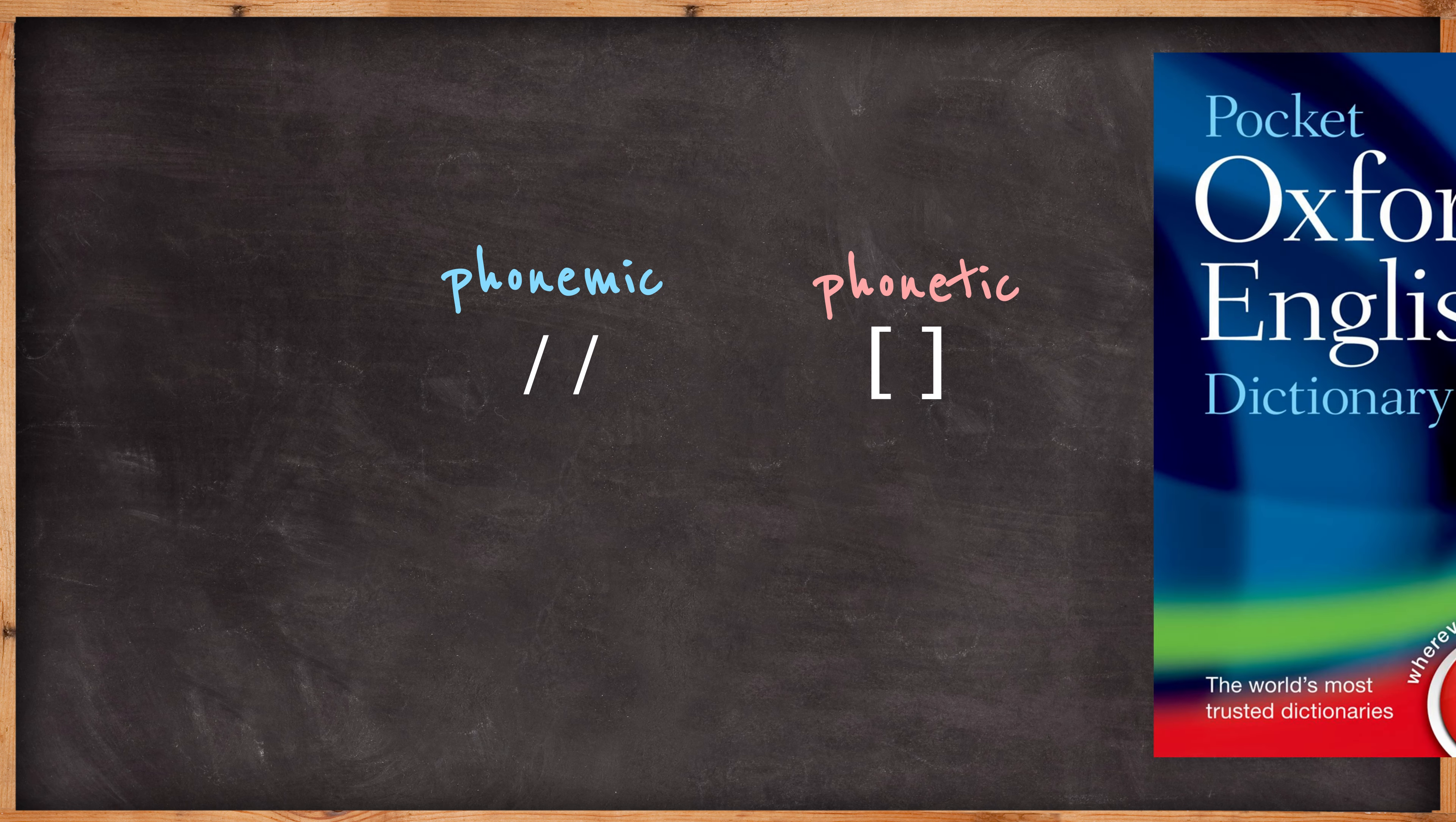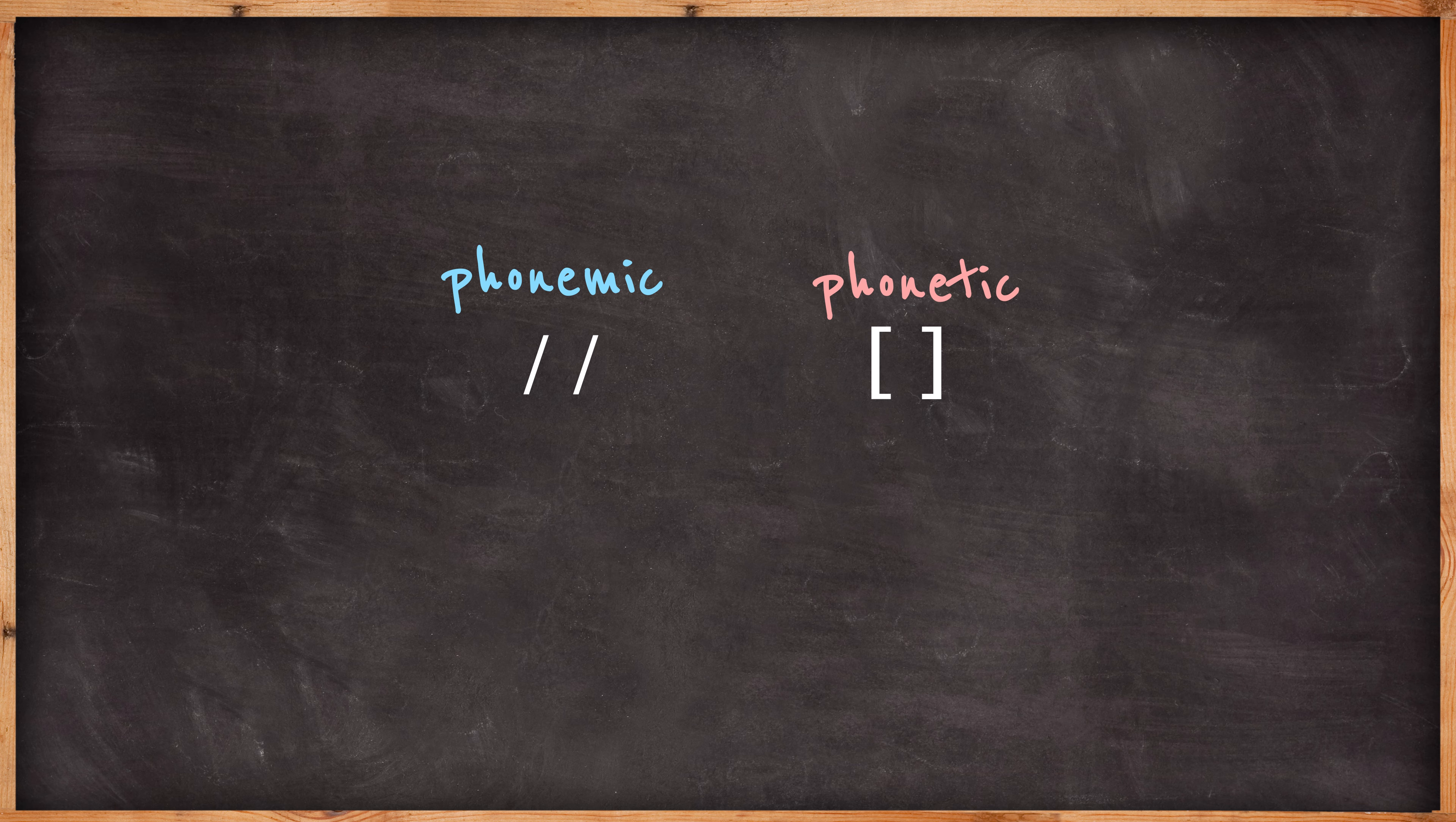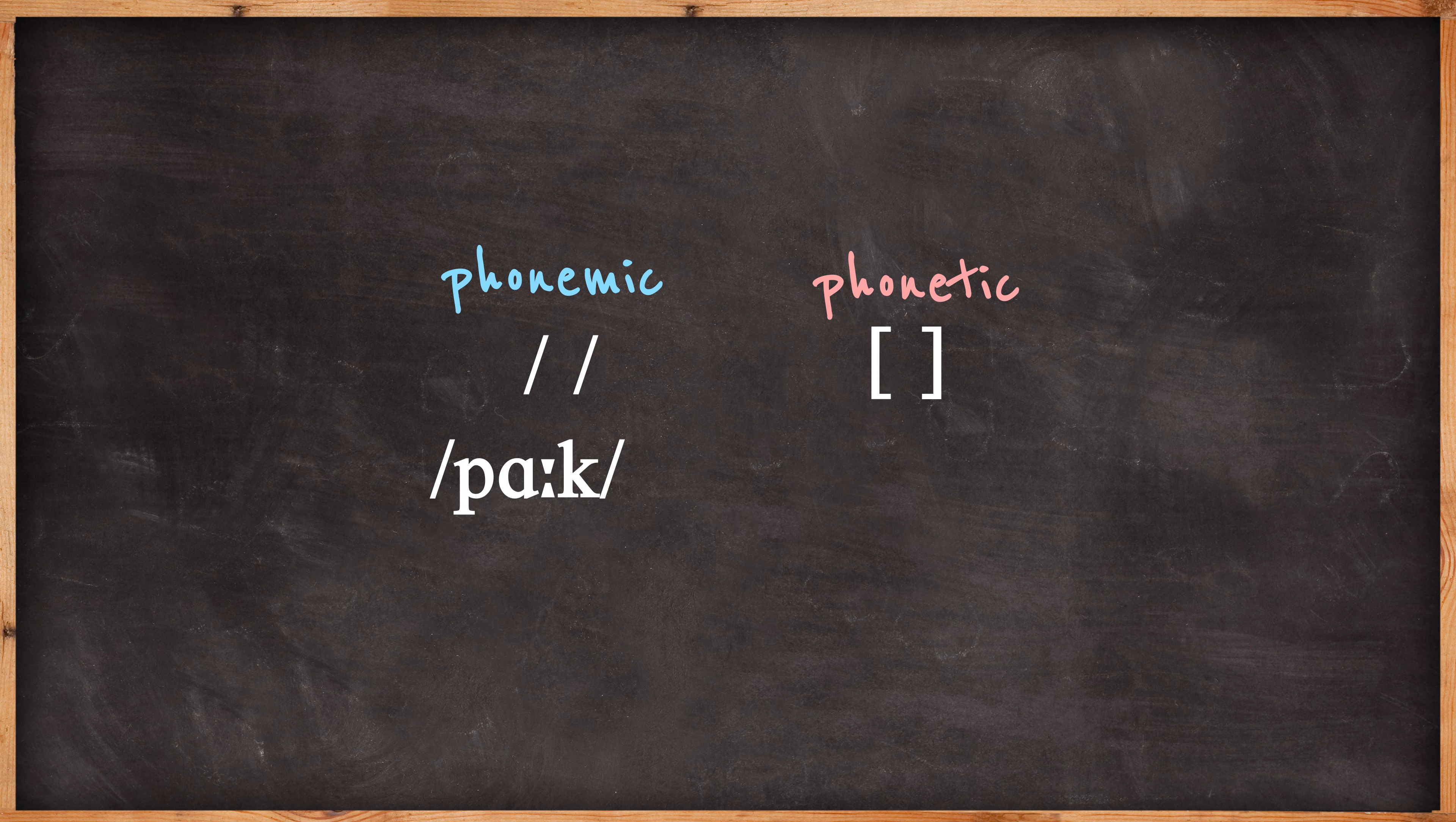The first thing to note is that in dictionaries you are definitely going to find the ones on the left, phonemic. Phonemic essentially means one symbol for one sound. So in a word like park, in British English there are three sounds.